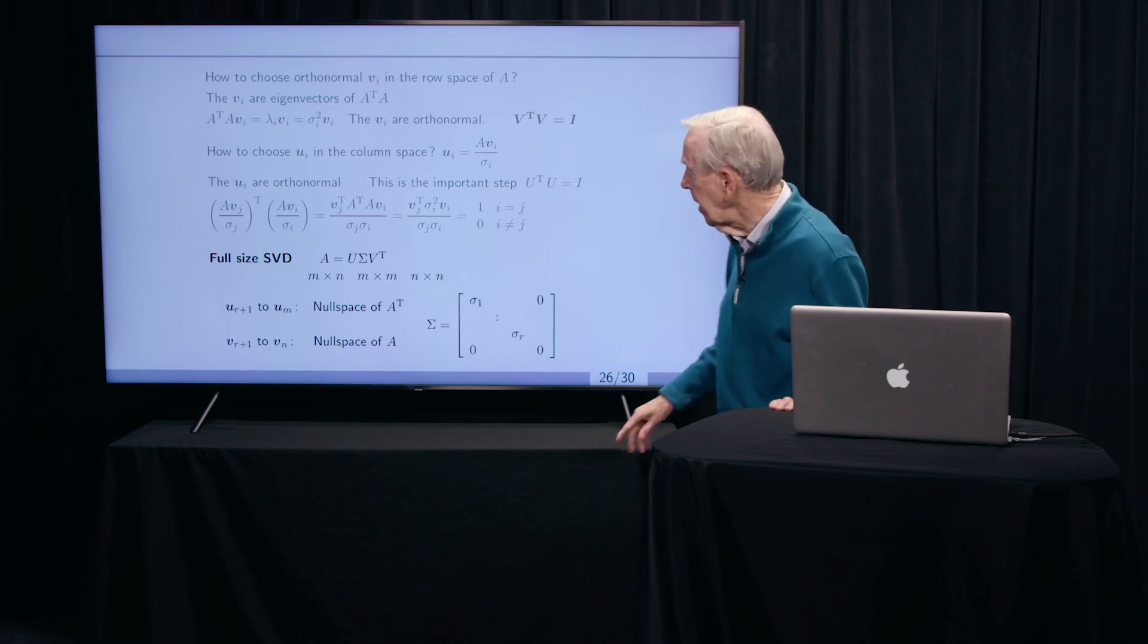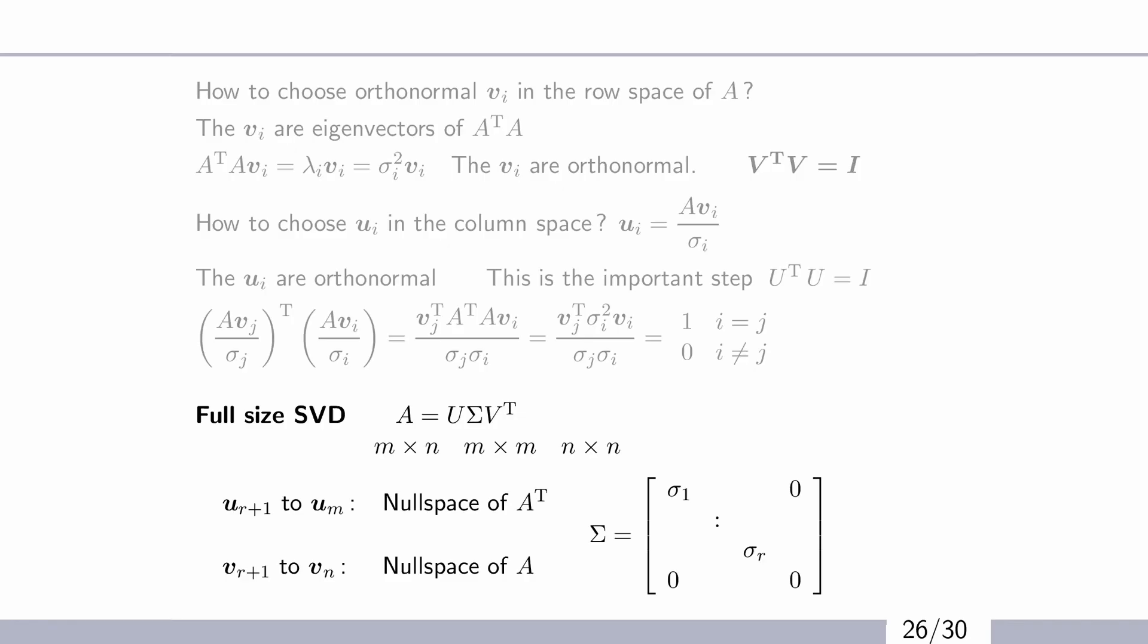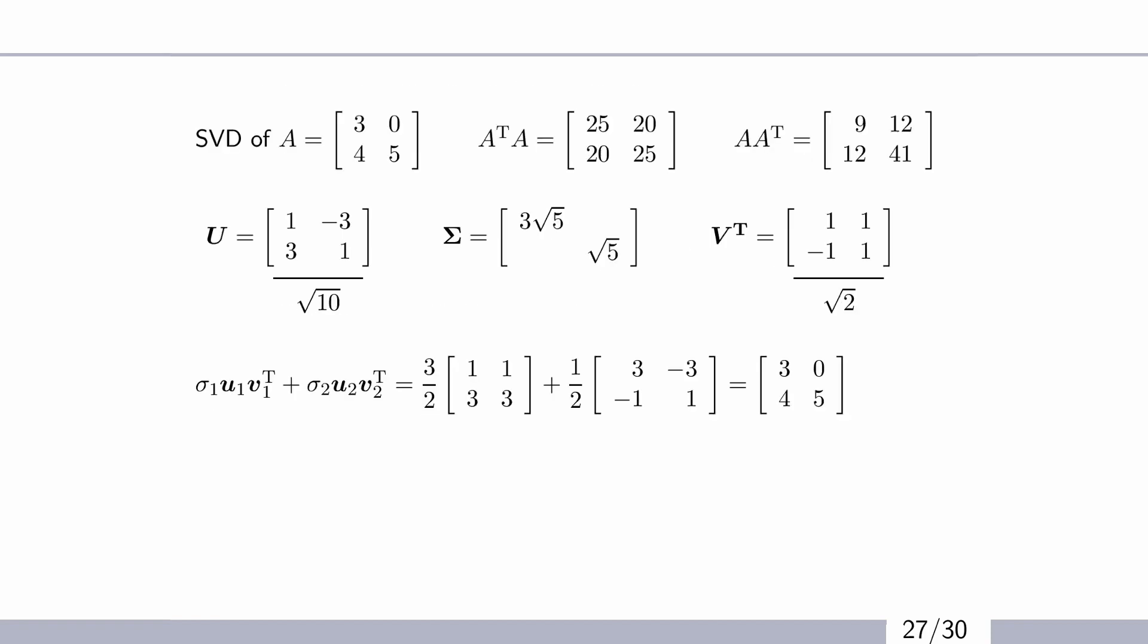So then remembering down here that capital sigma stands for the diagonal matrix of these positive numbers, sigma 1, sigma 2, down to sigma r. The rank, which came way back in the first slides, tells you how many there are. Good. Good. So that's a, oh, here's an example.